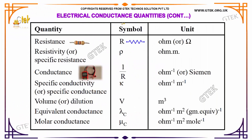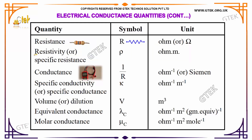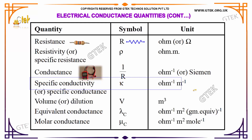Now, here is a summary of electrical conductance quantities. Resistance has symbol R and unit Ohm. Resistivity, also called specific resistance, has symbol rho and unit Ohm·meter. Conductance has symbol 1/R and unit Siemens or Ohm⁻¹. Specific conductivity, also called specific conductance, has symbol kappa (K) and unit Ohm⁻¹·meter⁻¹.